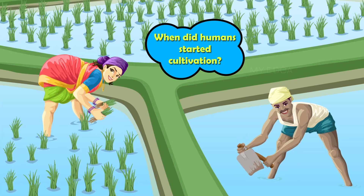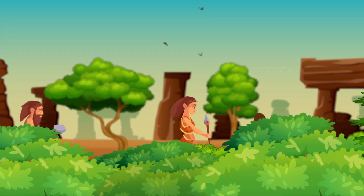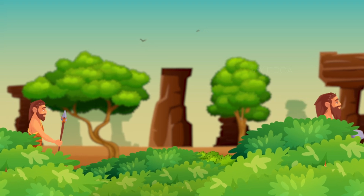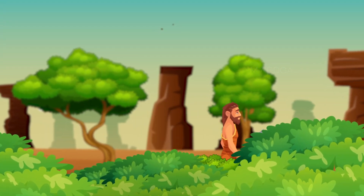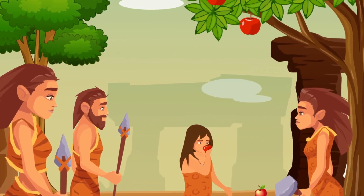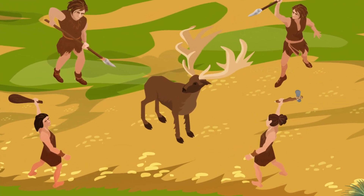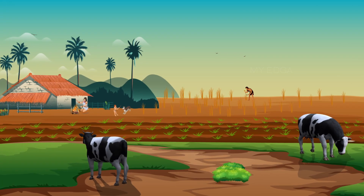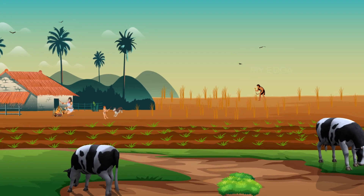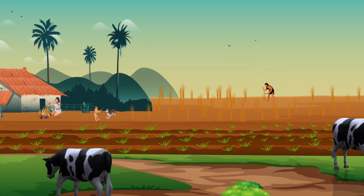From which time onwards did humans start cultivation? Till 10,000 BCE, people were nomadic — they wandered in groups from place to place searching for food and shelter. They collected raw fruits and vegetables and ate them, and also hunted animals for food. Later, they settled at a place and gradually cultivated crops such as rice, wheat, etc. This was the beginning of agriculture.